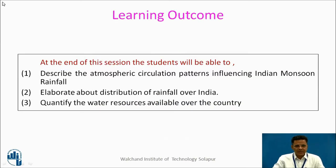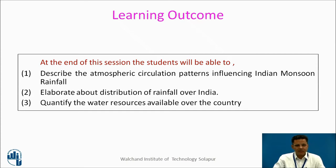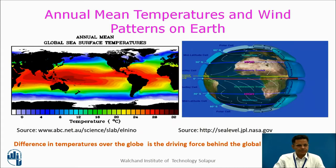Learning outcomes of this session. At the end of this session, students will be able to describe atmospheric circulation patterns influencing Indian monsoon rainfall, elaborate about distribution of rainfall over India, and quantify the water resources available over the country.